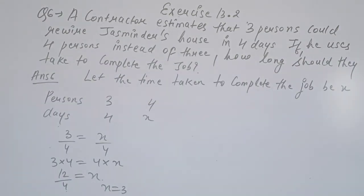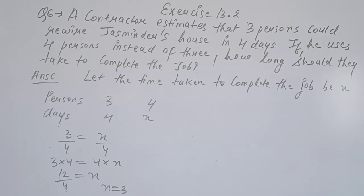Now let's come to question number 6. A contractor estimates that 3 persons could rewire a house in 4 days. How long should they take to complete the job if 4 persons are used instead?